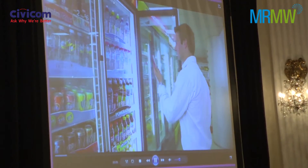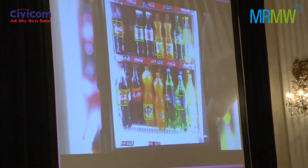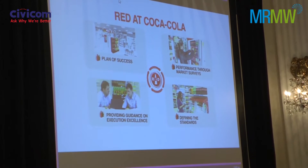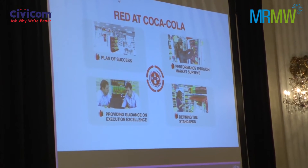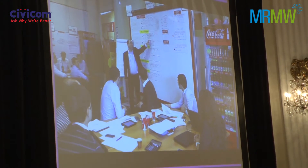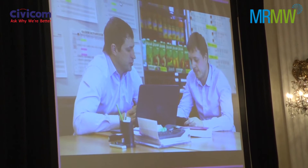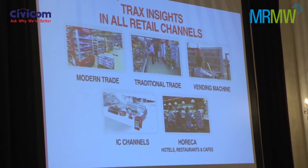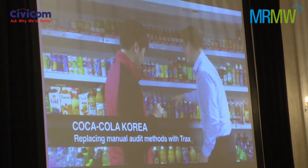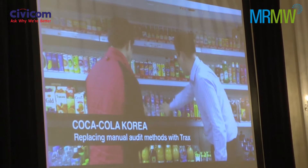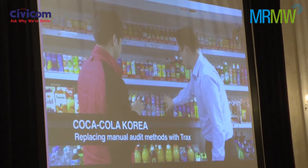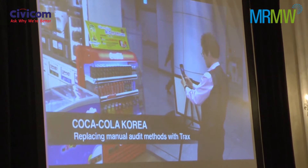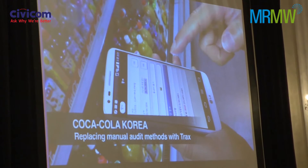Coca-Cola bottlers around the globe have been working with Trax to perfect their in-store execution with image recognition technology. Right Execution Daily, also known as RED, is Coca-Cola's global commercial execution process developed to drive and improve the capability of their sales teams. With Trax, Coca-Cola has managed to improve the RED audit effectiveness in all retail channels. At Coca-Cola Korea, sales reps spent most of their time in-store on tedious manual auditing activities, resulting in limited reporting and results. With Trax's image recognition solution, each sales rep can now invest up to 60% more time in selling, while maintaining the same level of audit costs.